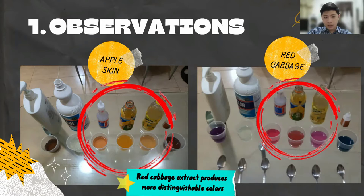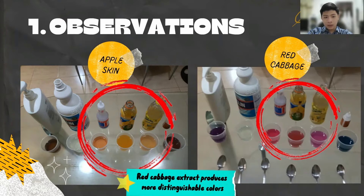Especially when I added the vinegar, lemon juice, and orange juice. As you can see, based on the apple skin extract, they produce very similar orange colors, while based on the red cabbage extracts, you can easily tell that it's pink, dark red, and light purple. This may cause inaccurate pH values when reading them.